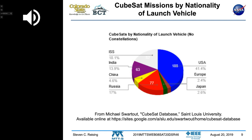Some other countries have substantial portions of CubeSat launches, including Russia, India at 14%, China at 5%, and Japan plays an important role. Some very small countries that haven't been able to get into space have also been able to launch CubeSats.